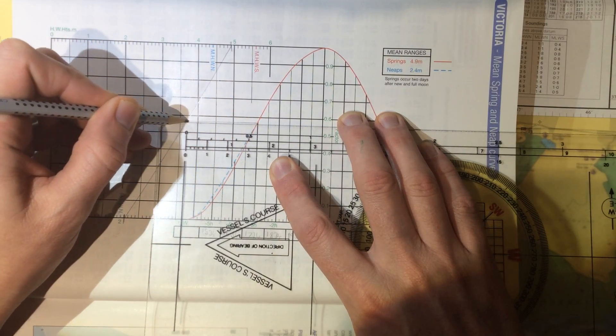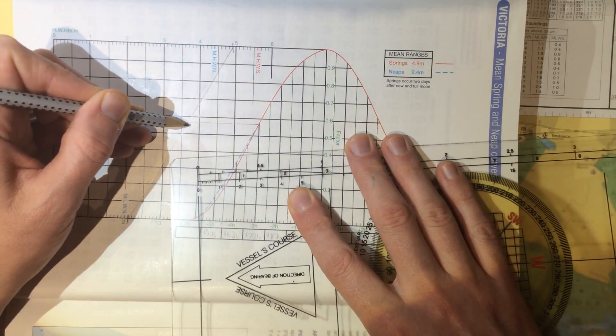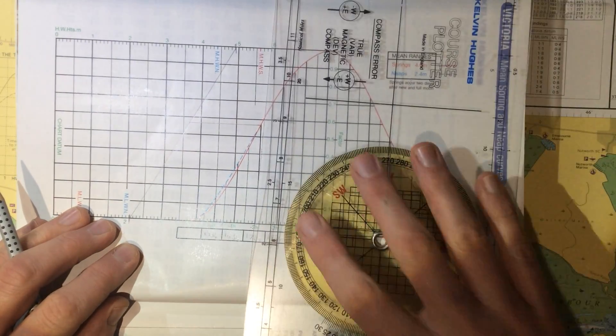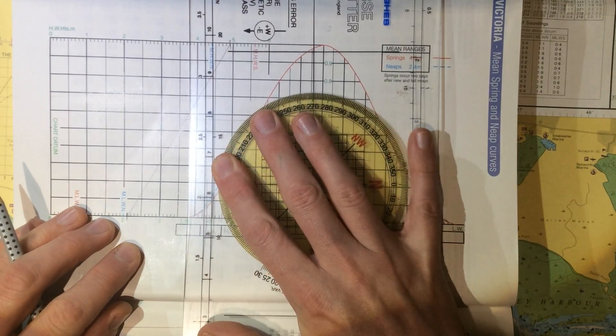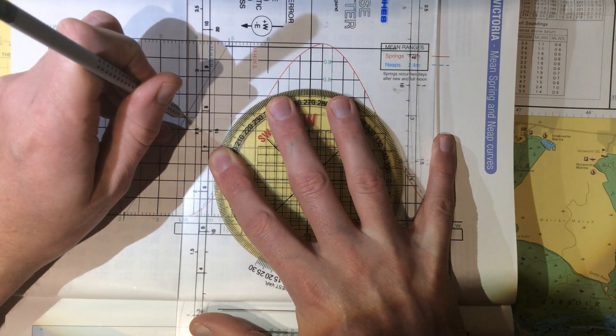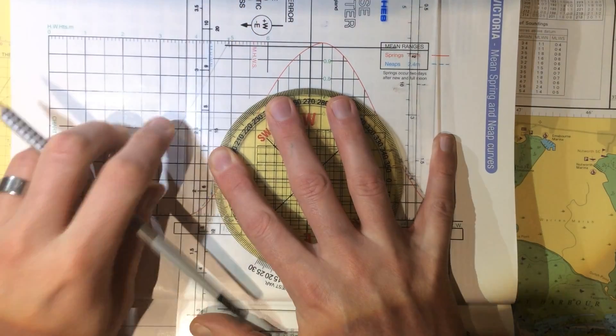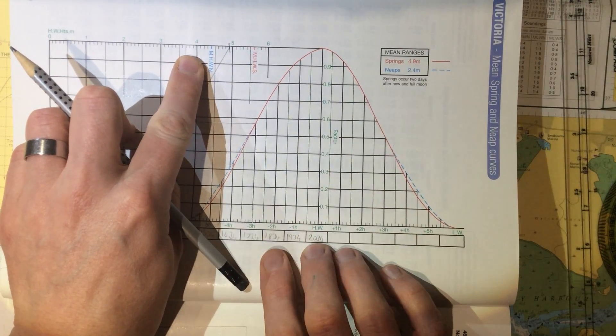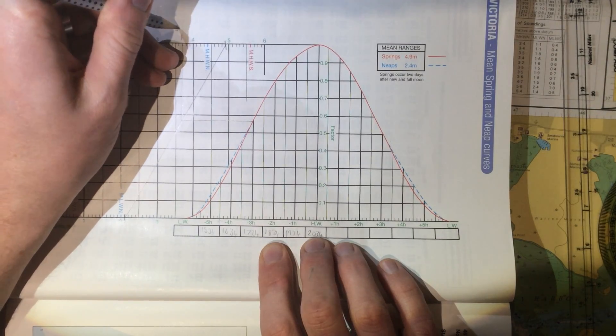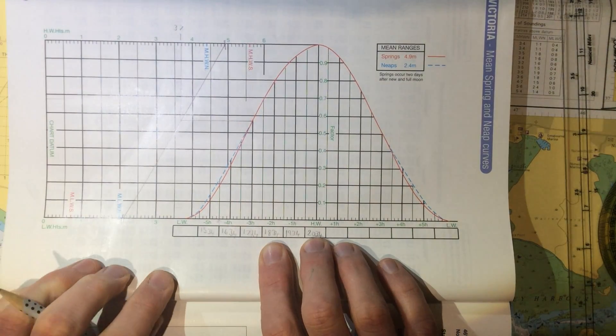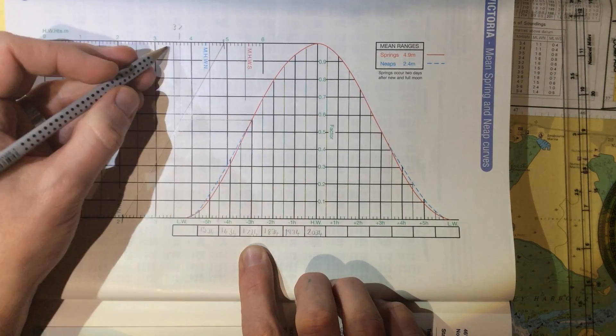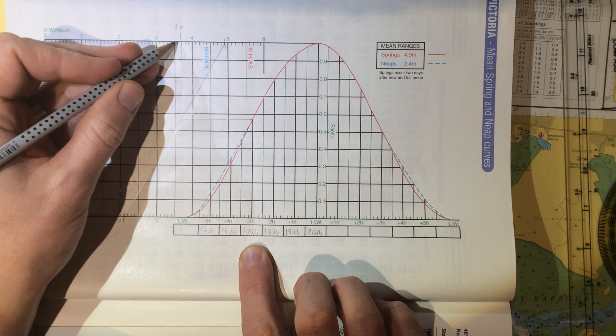We come across until we hit our new straight line we've drawn and then we have a choice of going up or down. In this case, it's more practical to go up as the scale extends across to that point. And then we can read off this scale. And at that point, it's reading 3.7 metres. So at 17:34, we expect there to be 3.7 metres of tide.